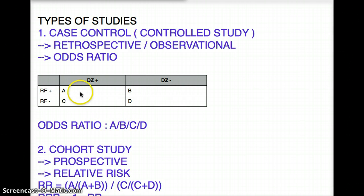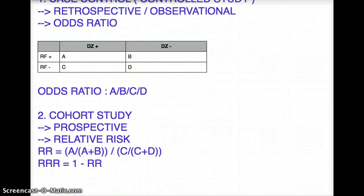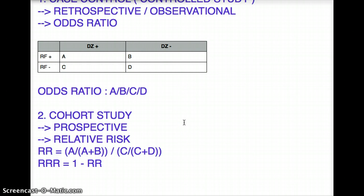Odds ratio is (a/b) / (c/d), which equals (a × d) / (c × b), where the table is disease positive, disease negative, risk factor positive, risk factor negative. Relative risk also deals with disease and exposed risk factor in cohort study, and the equation is (a / (a+b)) / (c / (c+d)). You can see how the questions can be very similar, which is why it's important to understand which study type you're dealing with.